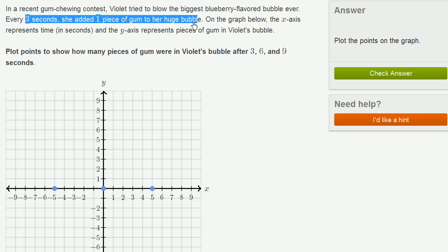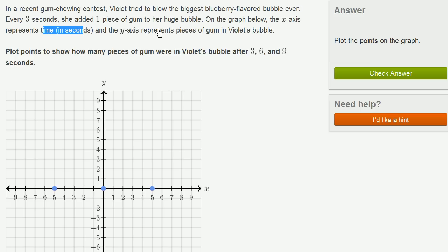On the graph below, the x-axis represents time in seconds. So this right over here is our x-axis. And the y-axis represents pieces of gum in Violet's bubble. So this is the y-axis right over here.